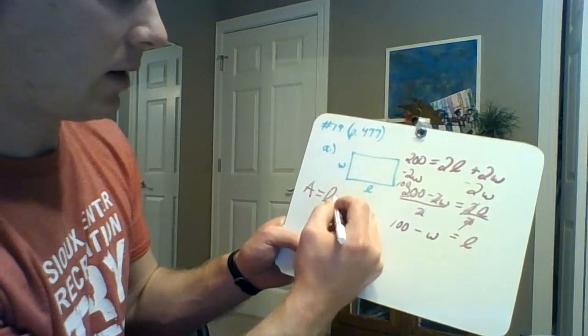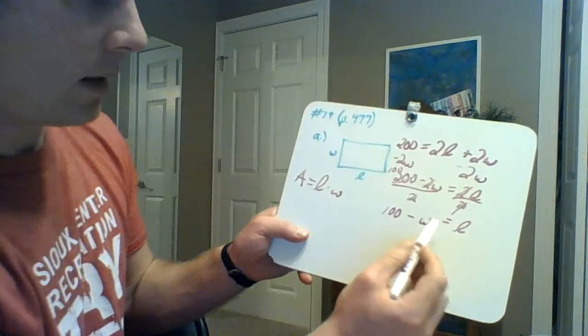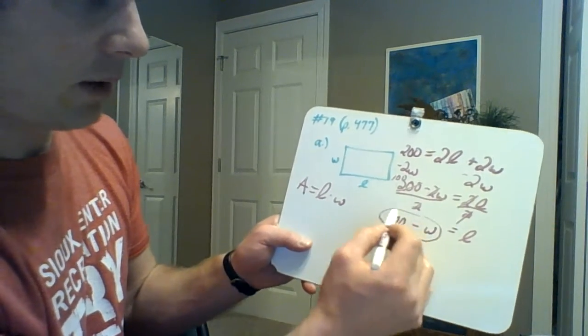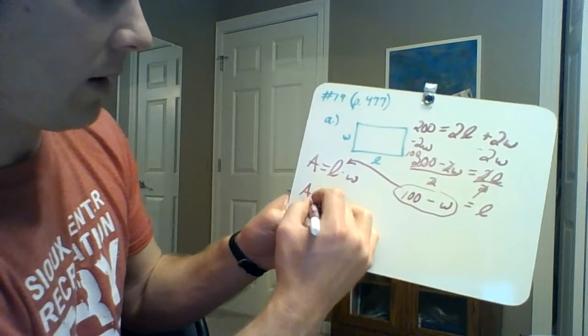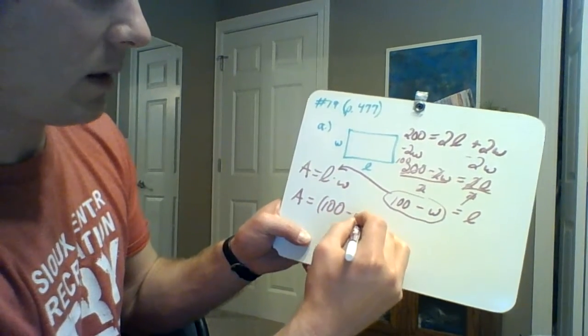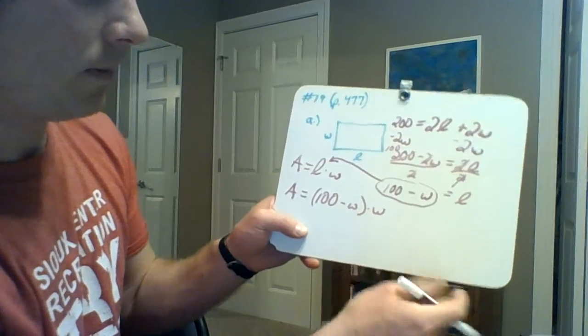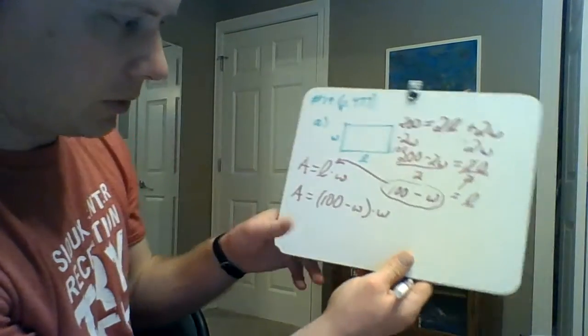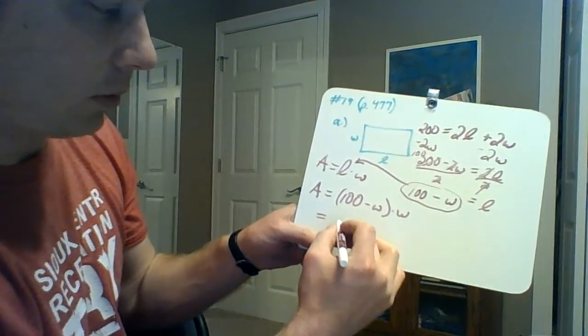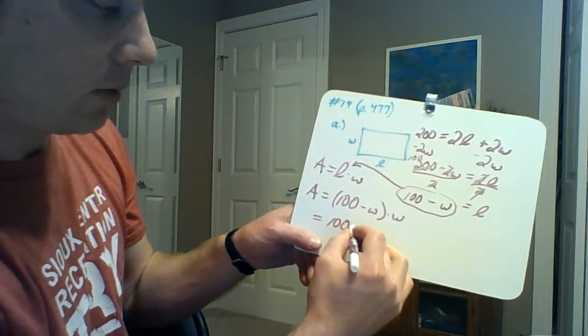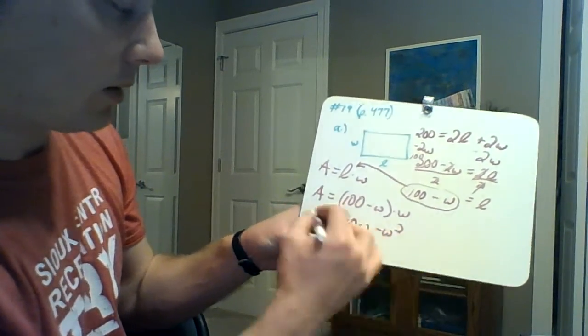So what you can do with that then is come over to that area function. Everything here is going to get substituted in place of L. So we have area equals (100 minus W) times W. When we distribute that W through, we have 100W minus W squared.